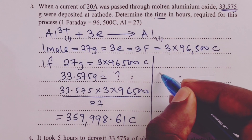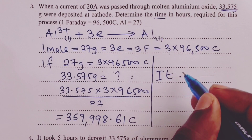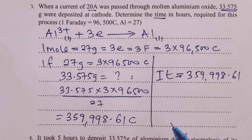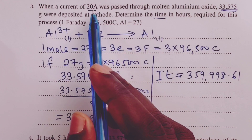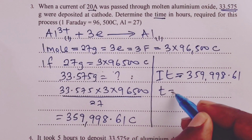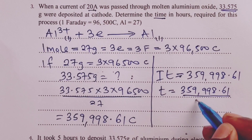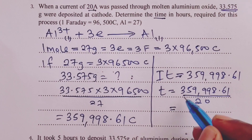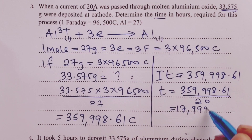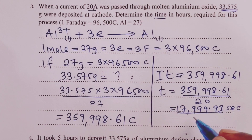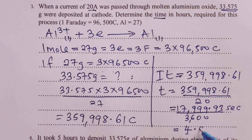Cross multiplication gives 33.575 × 3 × 96,500 divided by 27, giving us 359,998.61 coulombs. This quantity is given by IT. Current is 20 amperes, so time equals the quantity of electricity divided by current, which is 359,998.61 divided by 20, giving 17,999.93 seconds. We convert to hours by dividing by 3,600, giving 4.999 hours as our answer.